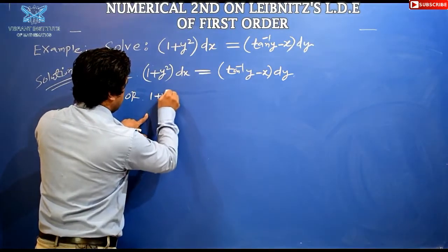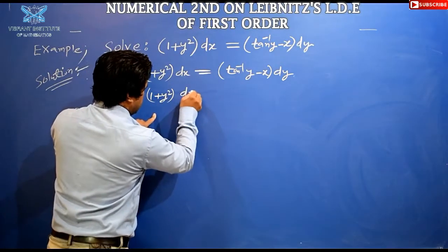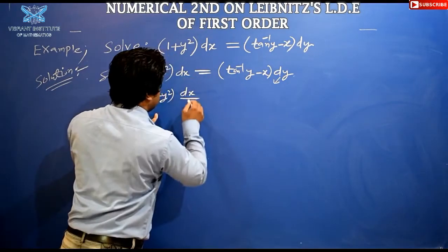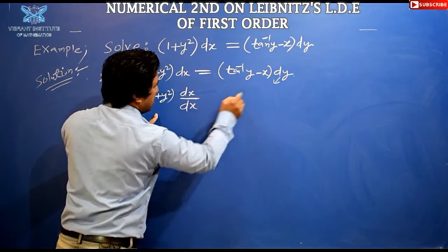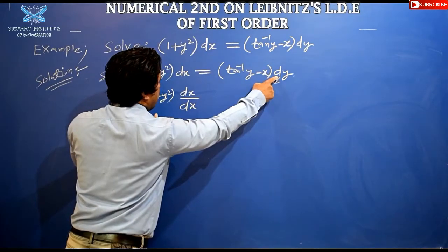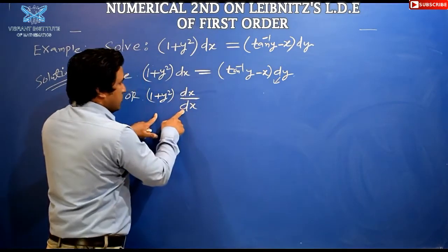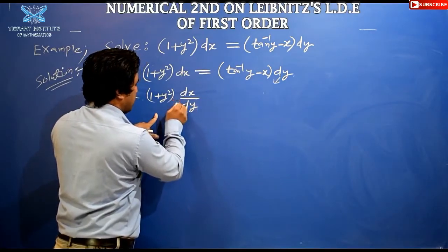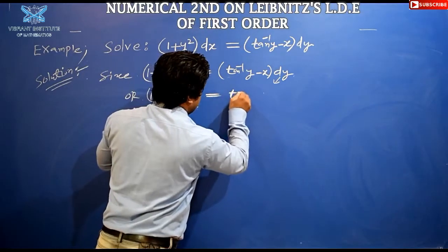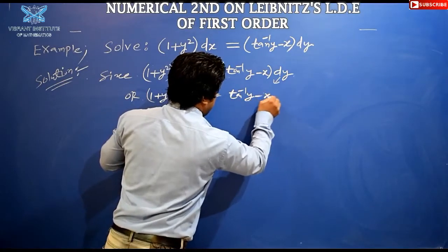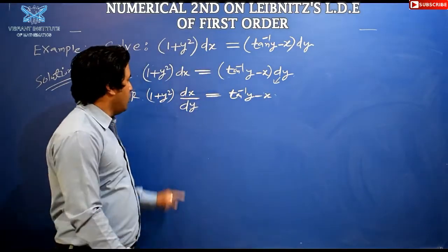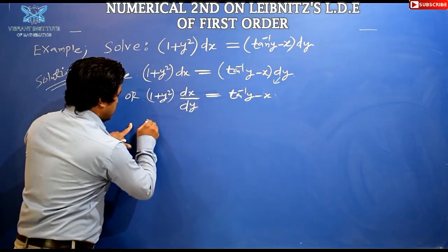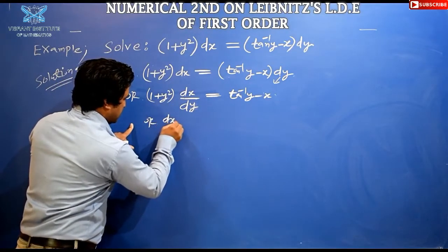I will simplify this. We have (1 + y²) as a factor with dx. I will transfer dy to the left-hand side, placing it in the denominator, then divide both sides by (1 + y²).